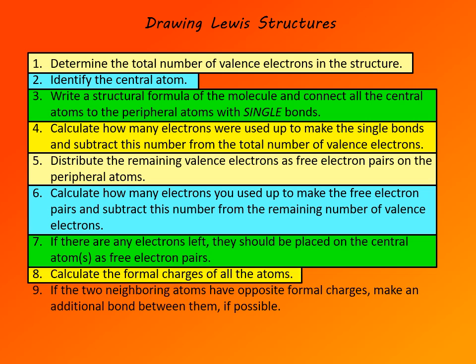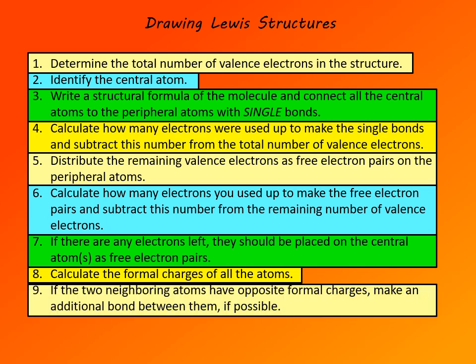In step 8, calculate formal charges on all atoms. If there are neighboring formal charges that are opposite — plus and minus — then in the final step, form multiple bonds: move an electron pair from the negatively charged atom to make a double or triple bond with the positively charged atom. That will eliminate the formal charges and generate a multiple bond. Once you have completed that process, you have the Lewis structure of the molecule.